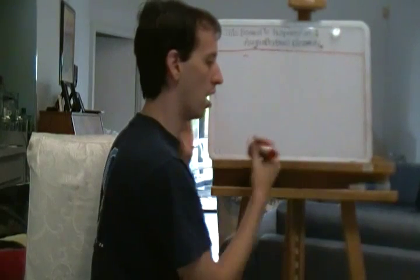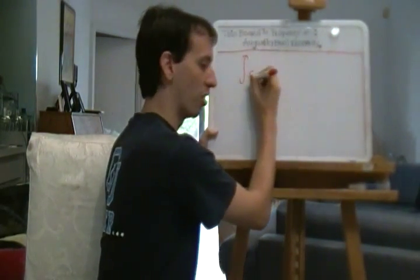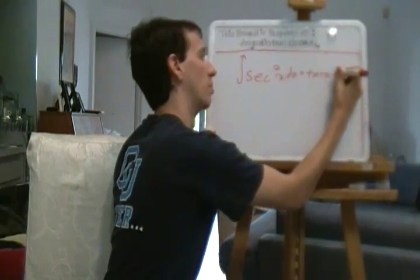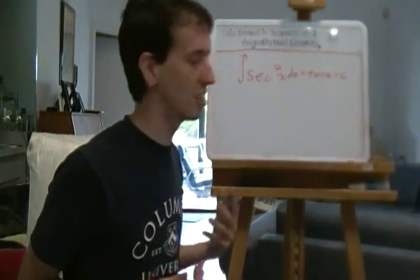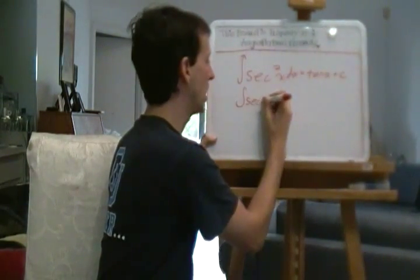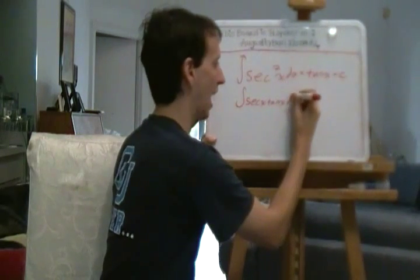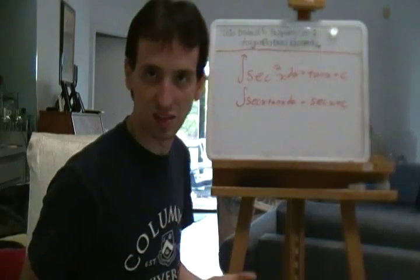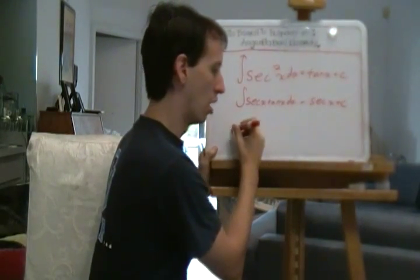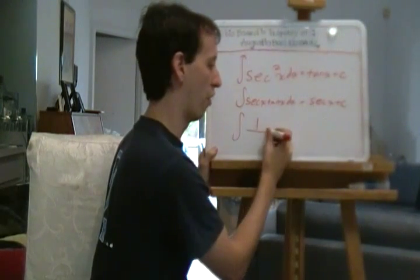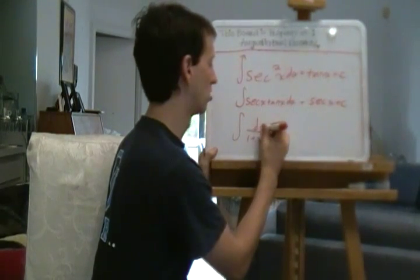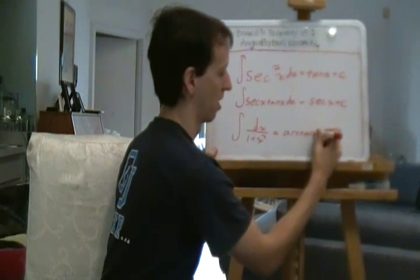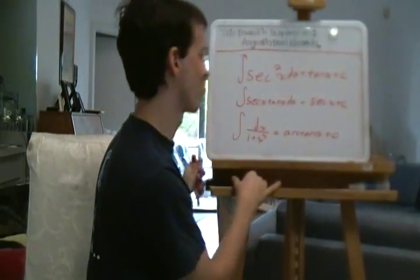We've got ∫sec²x dx = tan x + C — remember, the derivative of tangent is sec². Correspondingly, ∫sec x tan x dx = sec x + C, because the derivative of secant is sec x tan x. And ∫1/(1+x²) dx = arctan x + C. That's one of my favorites.